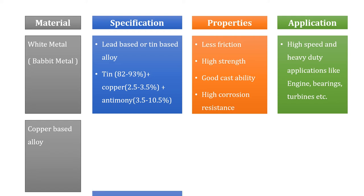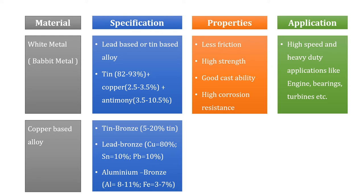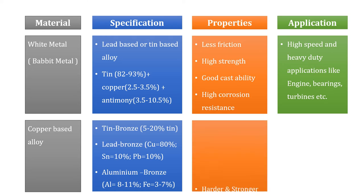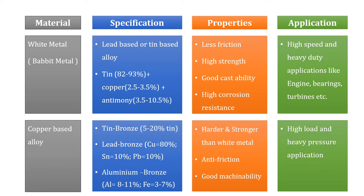The second type of bearing material is copper-based alloy, which includes tin bronze, lead bronze, and aluminum bronze alloys. In tin bronze, tin is 5 to 20 percent. In lead bronze, copper is 80 percent, tin 10 percent, and lead 10 percent. In aluminum bronze, aluminum is 8 to 11 percent and iron 3 to 7 percent. These alloys are harder and stronger than white metals, have anti-friction properties and good machinability, and are used in high load and heavy pressure applications.